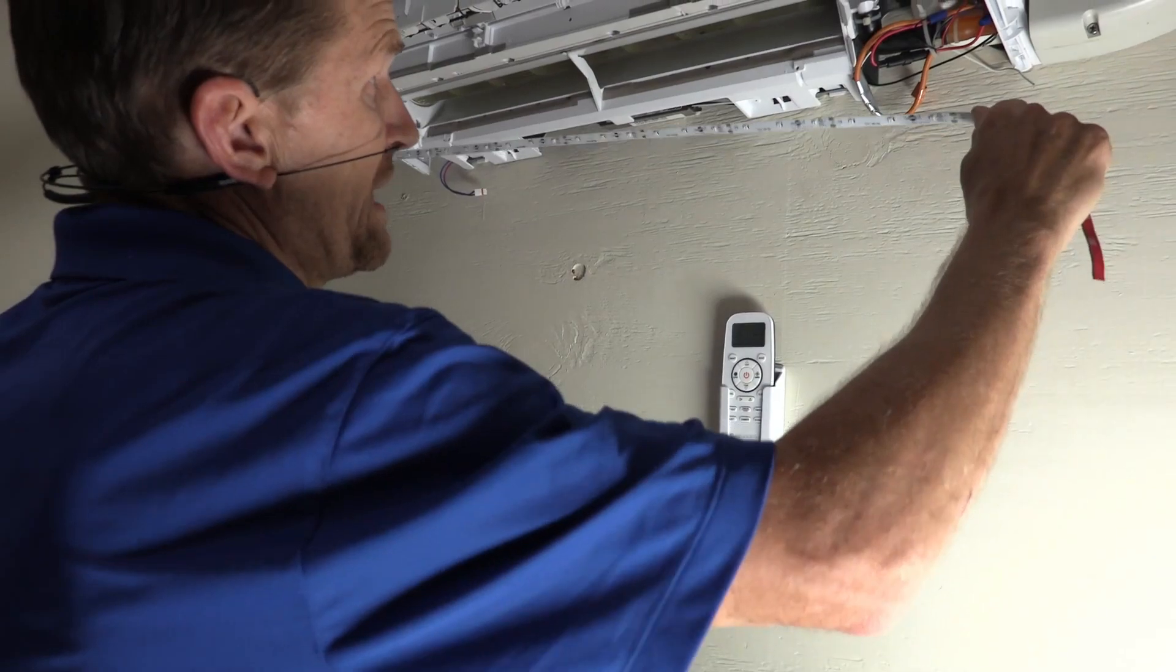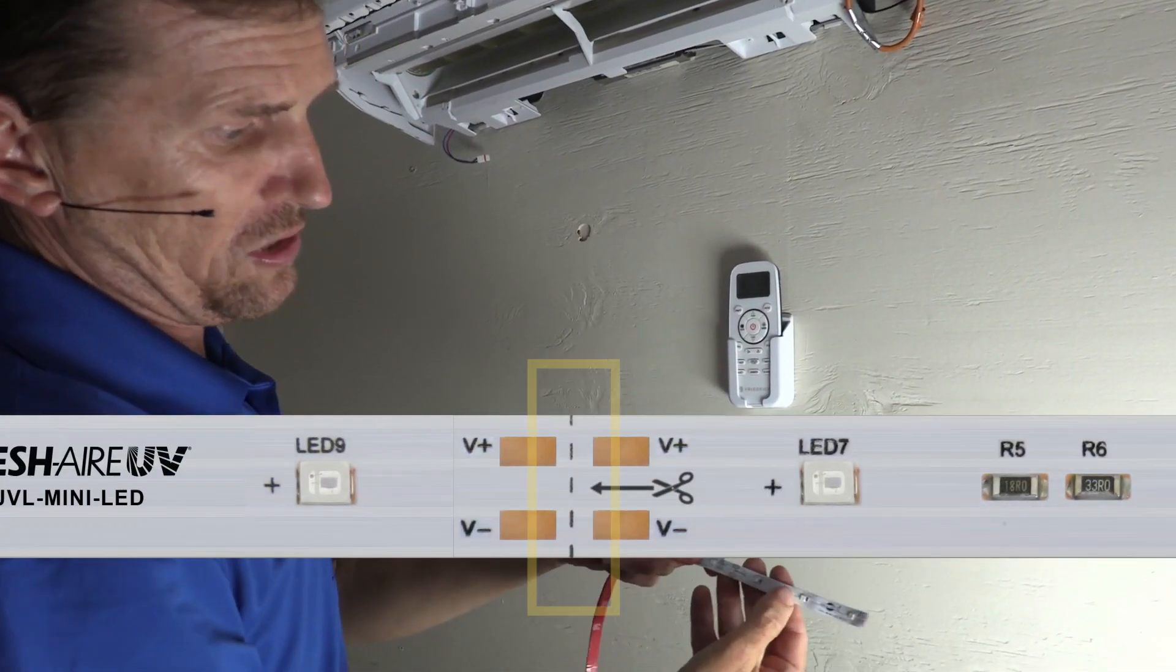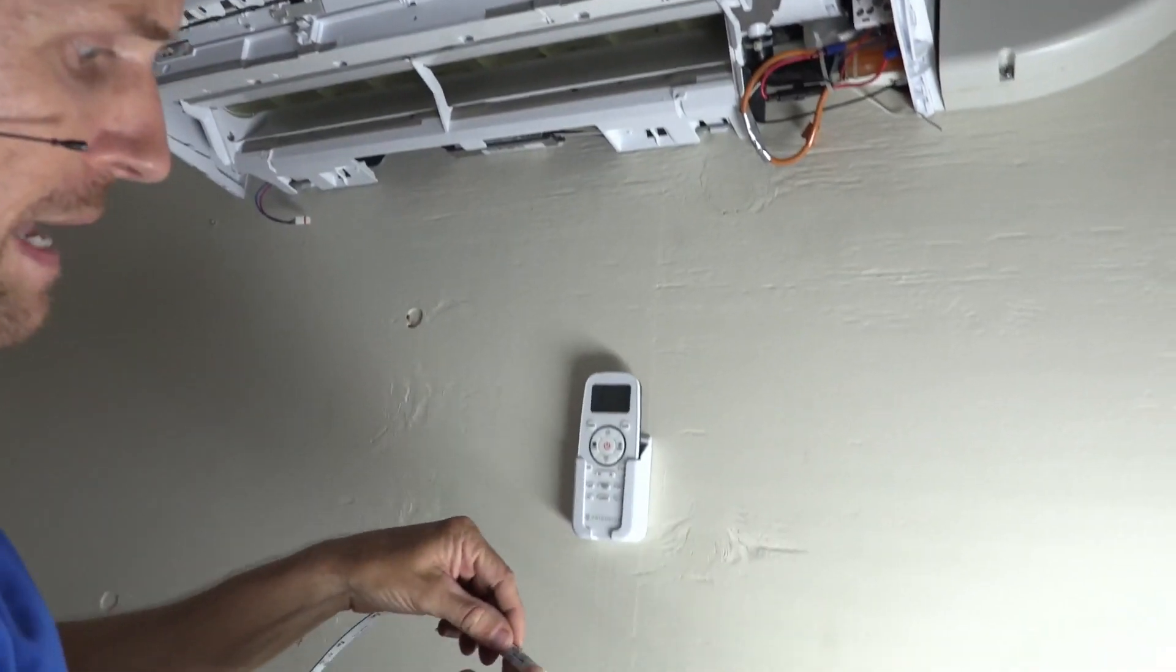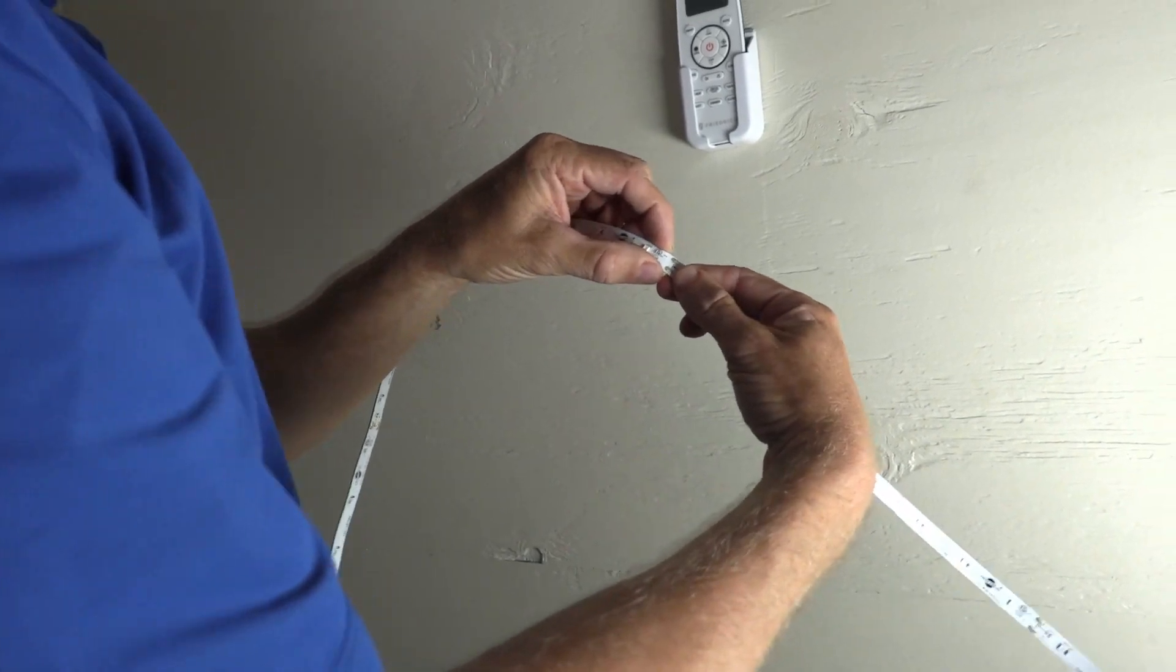This comes in a 40 inch length. Obviously, we're going to have to trim it at some point so you can actually see where there's a pair of scissors to trim it from. Now we're going to cut it at the desired length. We're going to trim this right there.